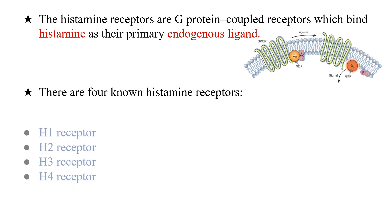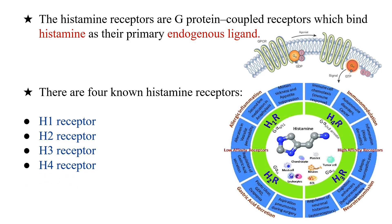Currently four types of histamine receptors have been identified: H1, H2, H3, and H4 receptors. H1 and H2 receptors are low affinity receptors, meaning histamine has low affinity for H1 and H2 as compared to H3 and H4. H3 and H4 are high affinity receptors. H1, H2, H3, and H4 receptors are coupled to different G proteins — Gs, Gi/o, and Gq — which is why their effector pathways or mechanisms of action are different.